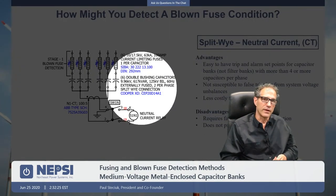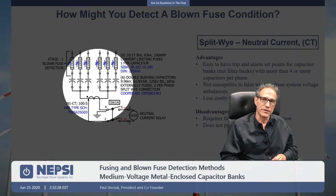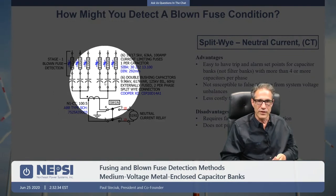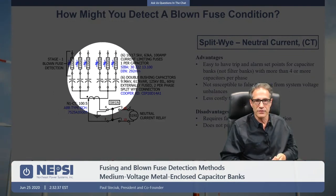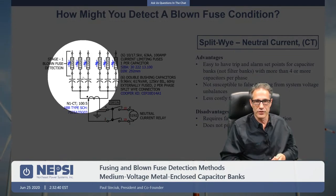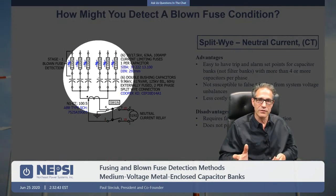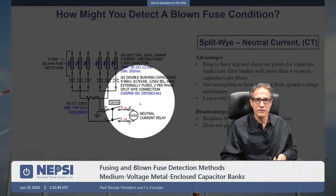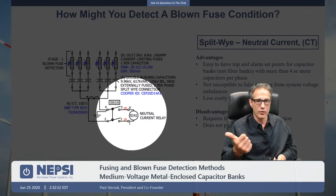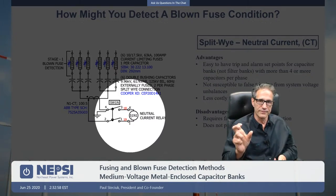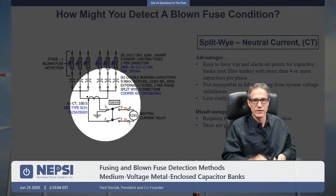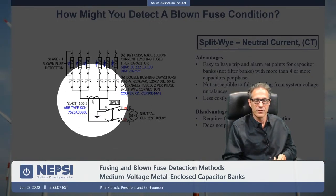Neutral current unbalance — we call this split Y neutral current unbalance — is one very common method for blown fuse detection. We split the capacitor bank into a split Y arrangement with half the capacitors on the left and half on the right, and we put a CT in the neutral. If there's any capacitive reactance unbalance between one half and the other, that unbalance creates a current flow in the CT. This CT is wired to some type of relaying device — whether a multifunction relay like a 487V, or a simple DIN-rail mounted overload relay — for definite-time protection to turn that stage off.